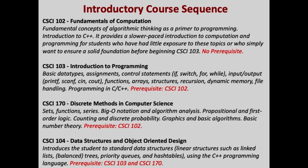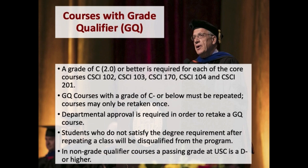CSCI 102 is where most students will start their CSCI coursework. For those who have AP credit or who have tested out of CSCI 102, you'll generally be taking CSCI 103 along with CSCI 170. These two courses will then lead you to CSCI 104. The department often refers to our core computer science courses as grade qualifiers, or GQs for short. Our grade qualifier courses include CSCI 102, CSCI 103, CSCI 170, CSCI 104, and finally CSCI 201.